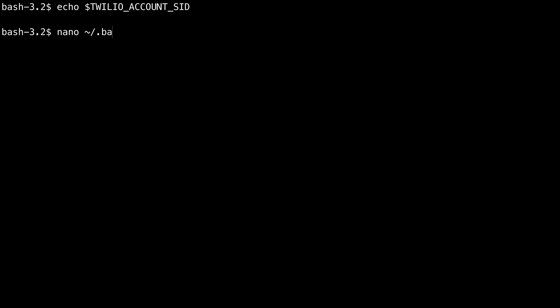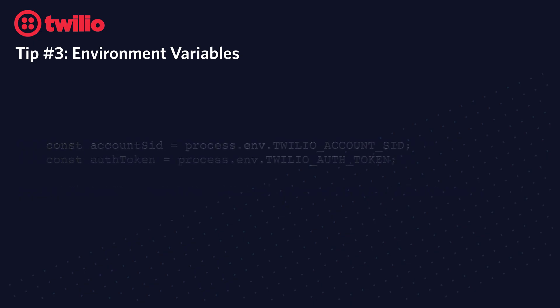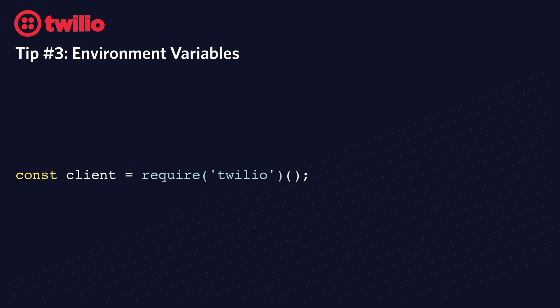There are more details about that down in the description below this video. Once you have your credentials saved, you can use them in code. Here is the Node.js code to load the Twilio AccountSid and Twilio Auth Token from the environment variables and use them to instantiate a Twilio REST client. Here's a pro tip though: if you follow this naming scheme, you don't even need to access these environment variables directly — you can just instantiate the Twilio REST client and Twilio will find them with those names.